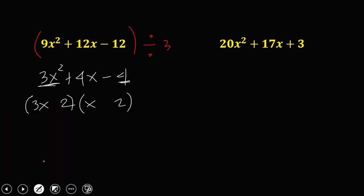Checking the factors: one cross product gives 2x and the other gives 6x, producing positive 4x. So one 2 must be negative. The negative 2x comes from this arrangement, meaning one factor is negative and one is positive. This is the correct factoring of the third equation.